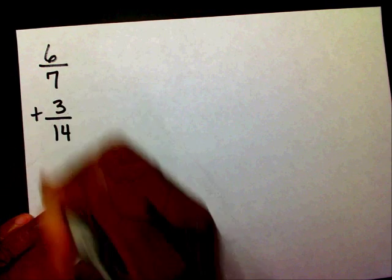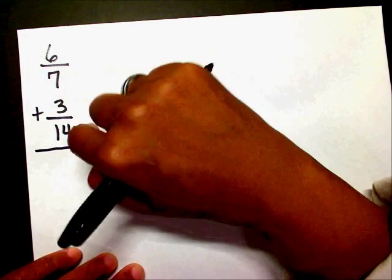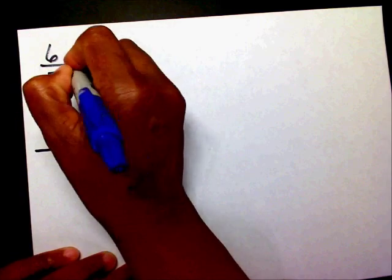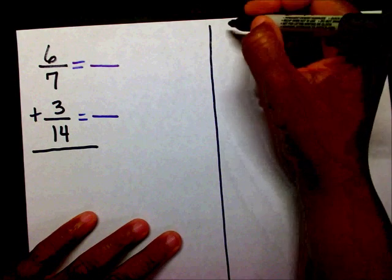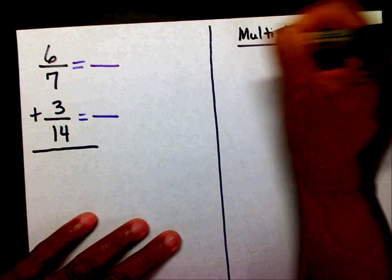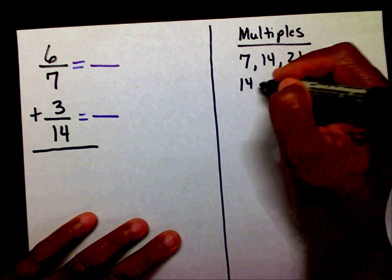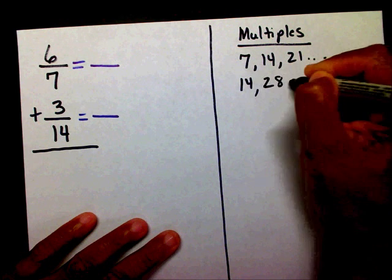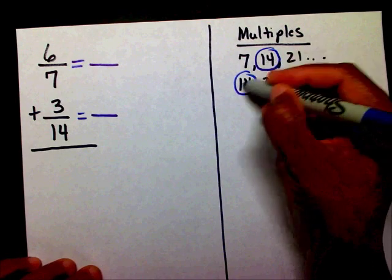6/7 plus 3/14. I am adding fractions, so first thing I need is a common denominator. I have a denominator of 7 and a denominator of 14 — they're not the same, so I need to get a common denominator. I'm going to write my multiples of 7 and 14. Multiples of 7: 7, 14, 21, and on and on. Multiples of 14: 14, 28, and on and on. Immediately I can see they share a common multiple of 14, so this is going to be my new denominator.